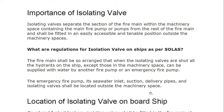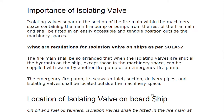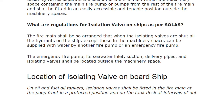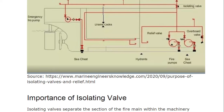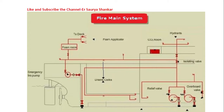Regarding location of the isolating valve on board: on oil and fuel oil tankers, an isolation valve shall be fitted in the fire main at the poop front in a protected position, and on the tank deck at intervals of not more than 40 metres, to preserve the integrity of the fire main system in case of fire or explosion.